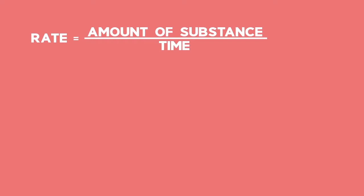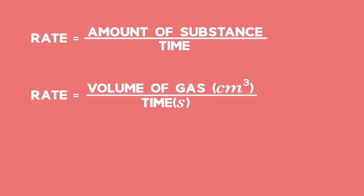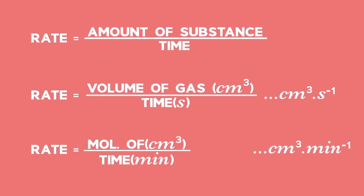So we may ask ourselves what is meant by rate? Rate is a measure of how fast or how slow something is. In chemistry, we speak of a rate of reaction. This tells us how fast or slow a reaction is.